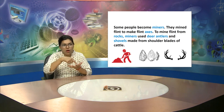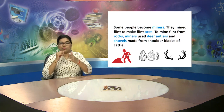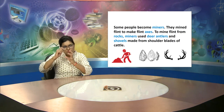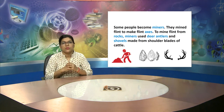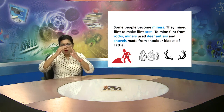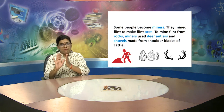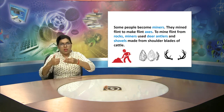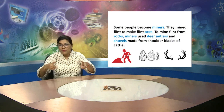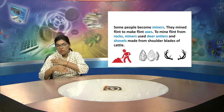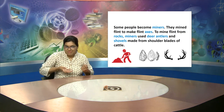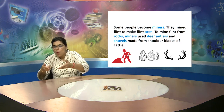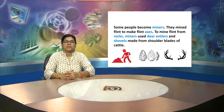Because resources needed to be provided for those people, some people became miners who worked in the mines. They mined flint to make flint axes. To mine flint from rocks, miners used deer antlers and shovels as tools, and these tools were made from the shoulder blades of cattle — domestic animals or sometimes wild animals. After they died, their bones were used for making these tools, which were used in the mines.